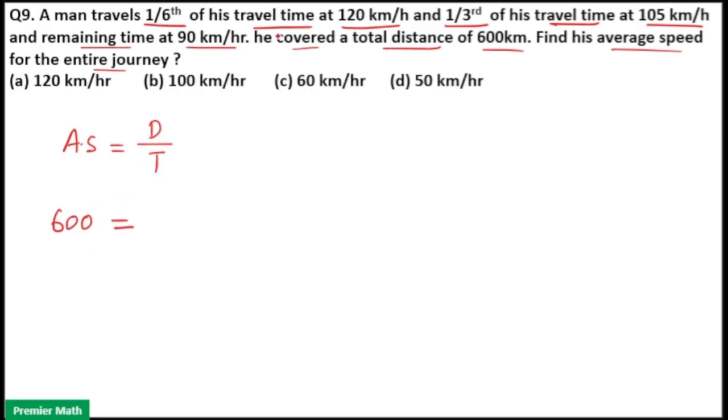Here he traveled 1/6th of his travel time at 120 km per hour. So speed is 120 and time taken is T/6. Again he traveled 1/3rd of his travel time at 105 km per hour. So 105 is speed and time is T/3.